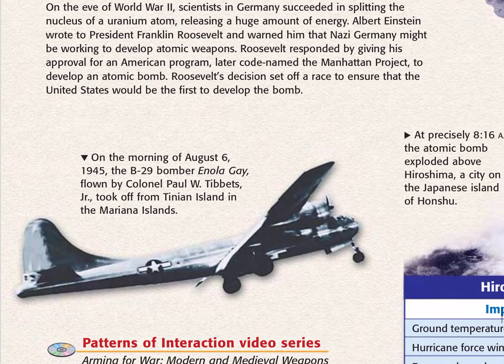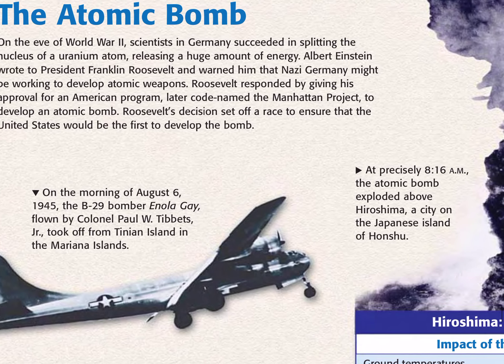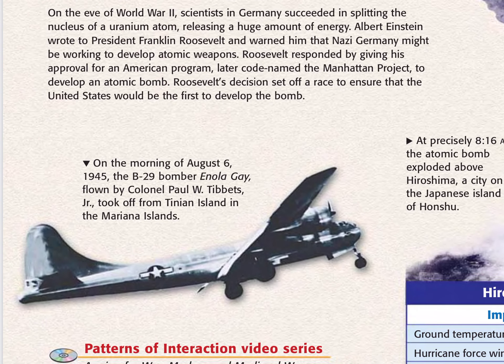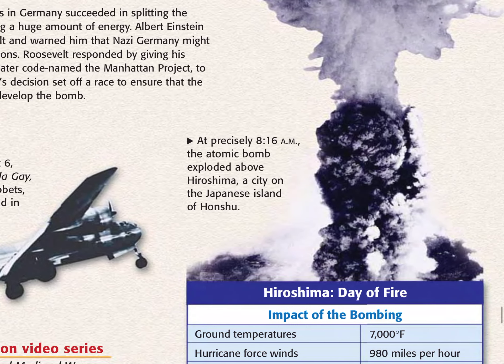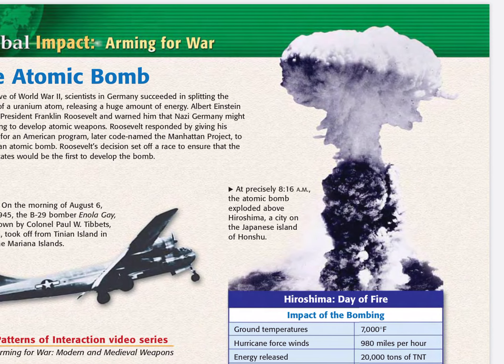On the morning of August 6th, 1945, the B-29 bomber Enola Gay, flown by Colonel Paul W. Tibbetts Jr., took off from Tinian Island in the Mariana Islands. At precisely 8:16 a.m., the atomic bomb exploded above Hiroshima, a city on the Japanese island of Honshu.